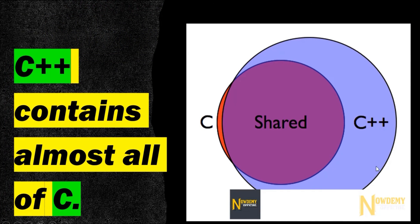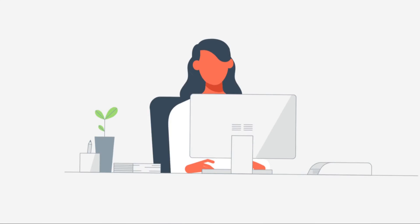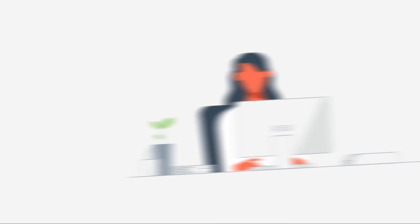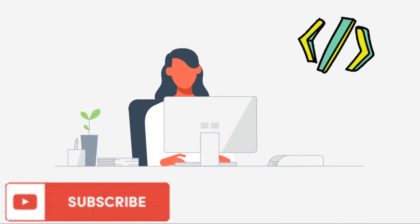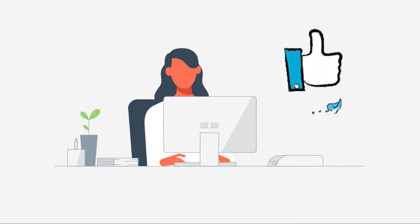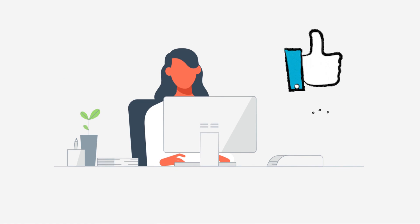Here is the pictorial representation of how C++ contains almost all of C. These are the major differences between C and C++ programming languages. Of course, there are loads of other differences as well. Do let me know if you want me to include anything in the list.